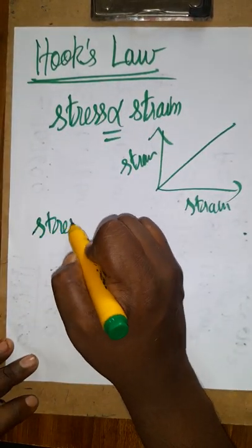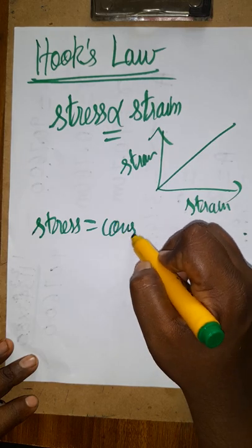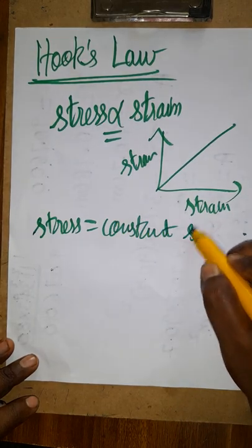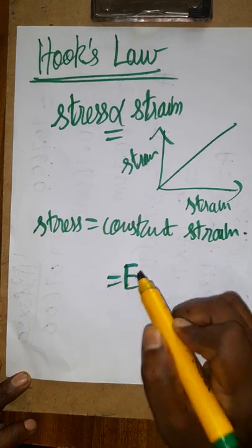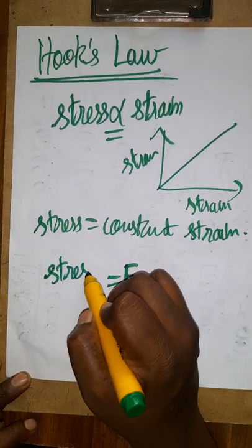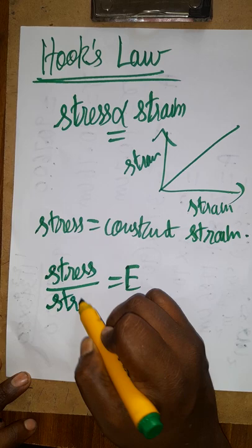When we express this relationship, we get a constant. That constant is called the modulus of elasticity. Stress equals constant times strain, or the modulus of elasticity equals stress divided by strain.